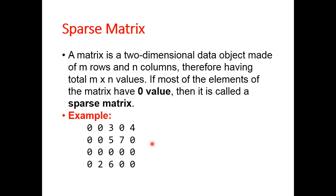Here you can see an example. In this matrix, we have more zeros as compared to non-zero elements. This kind of matrix is known as a sparse matrix. But if we want to store a sparse matrix in memory, we don't store all the values like zeros and non-zeros — we just focus on the non-zero elements.